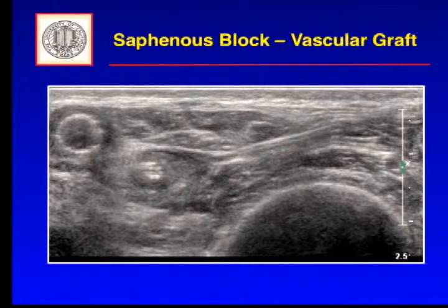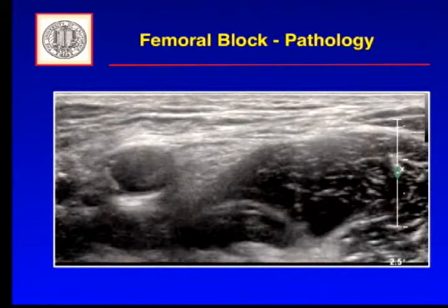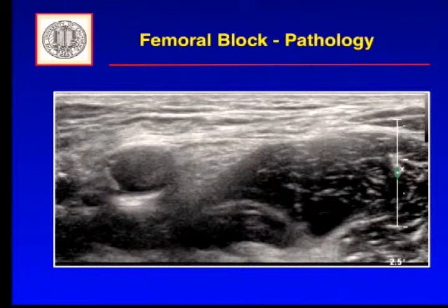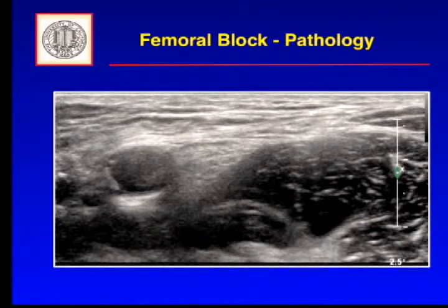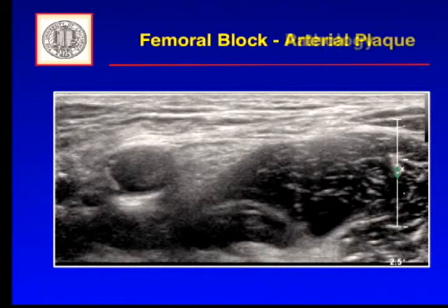Here's a femoral nerve block. You can see the femoral artery, femoral nerve, skin surface here, and we heard a lot about posterior acoustic enhancement that occurs deep to vessels. In this case it's arterial plaque — you can see plaque on the wall. There may be implications for post-operative anticoagulation and management of those patients. You'll see this a fair bit.